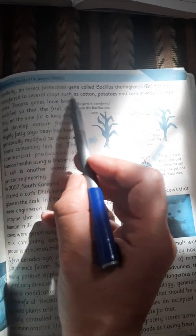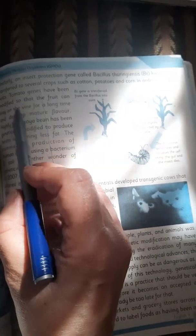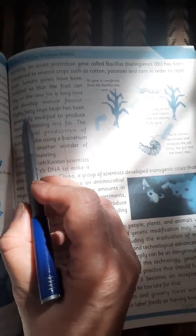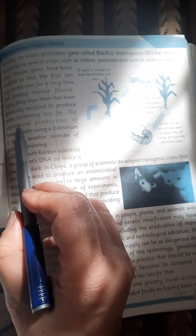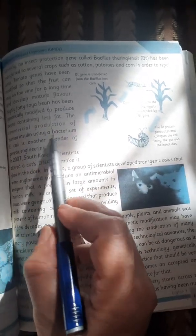Such as cotton, potatoes, and corn in order to repel pests. Tomato genes have been modified so that the fruit can stay on the vine for a long time and develop mature flavor. Highly fatty soybean has been genetically modified to produce beans containing less fat. The commercial production of human insulin using a bacterium E. coli is another wonder of genetic engineering.